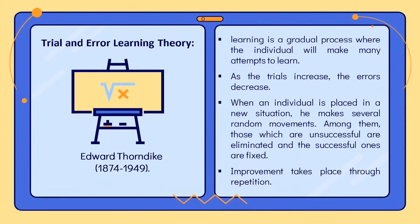The first is the trial and error learning theory, developed by Edward Thorndike, an American psychologist. He argues that learning takes place through this method. According to him, learning is a gradual process where the individual will make many attempts to learn. The essence of this theory is: as the trials increase, the errors decrease. This is possible because of associations formed between sense impressions and impulses to action — bonds or connections that can be strengthened or weakened in the making and breaking of habits.